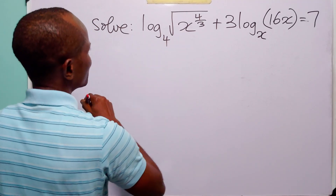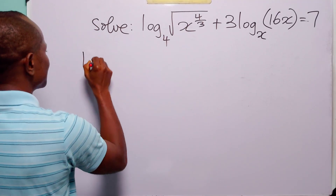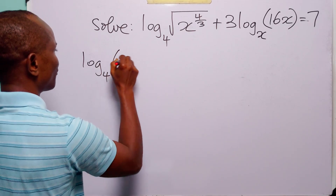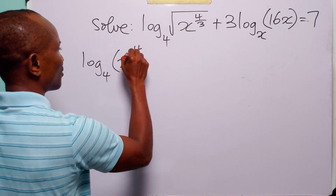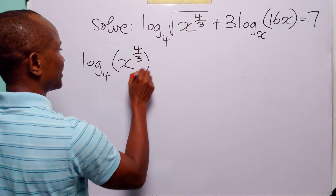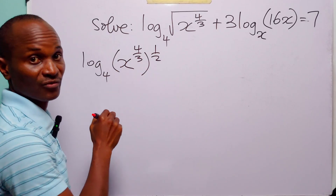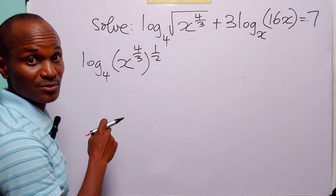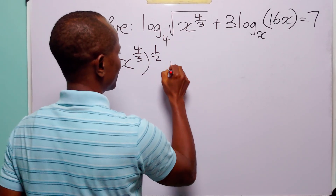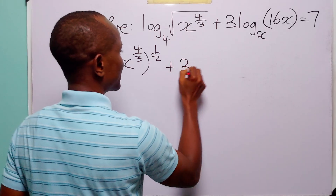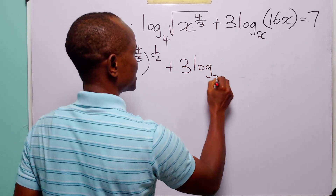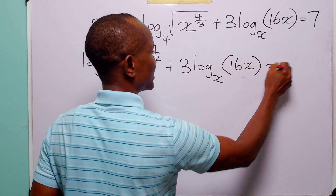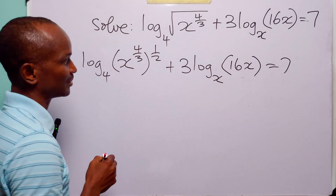Beginning with this first term, we can rewrite this as log to base 4 of x to the power 4 over 3, all to the power half. The power half is because of this square root. And here we have 3 times log to base x of 16x, and this is equal to 7.